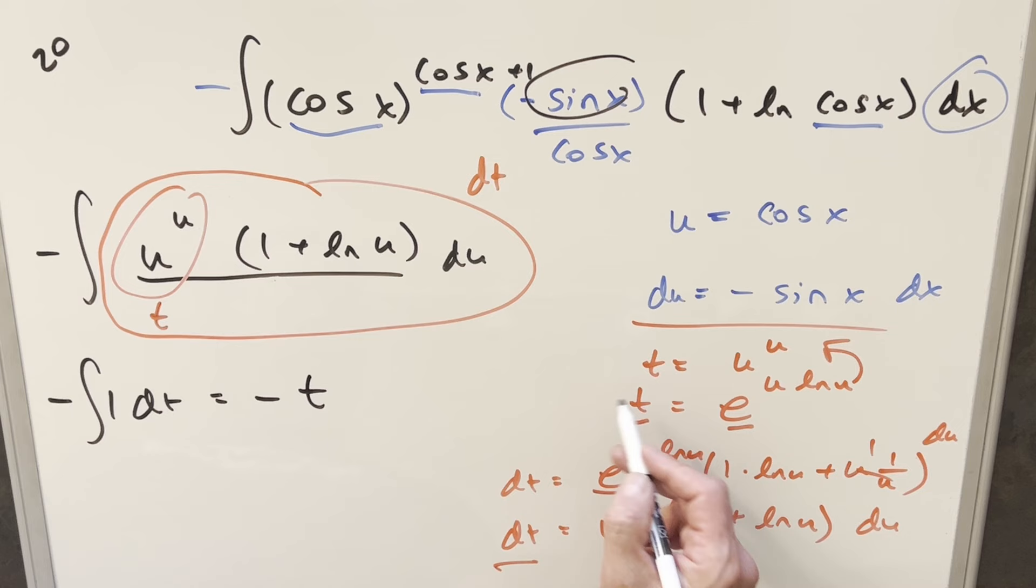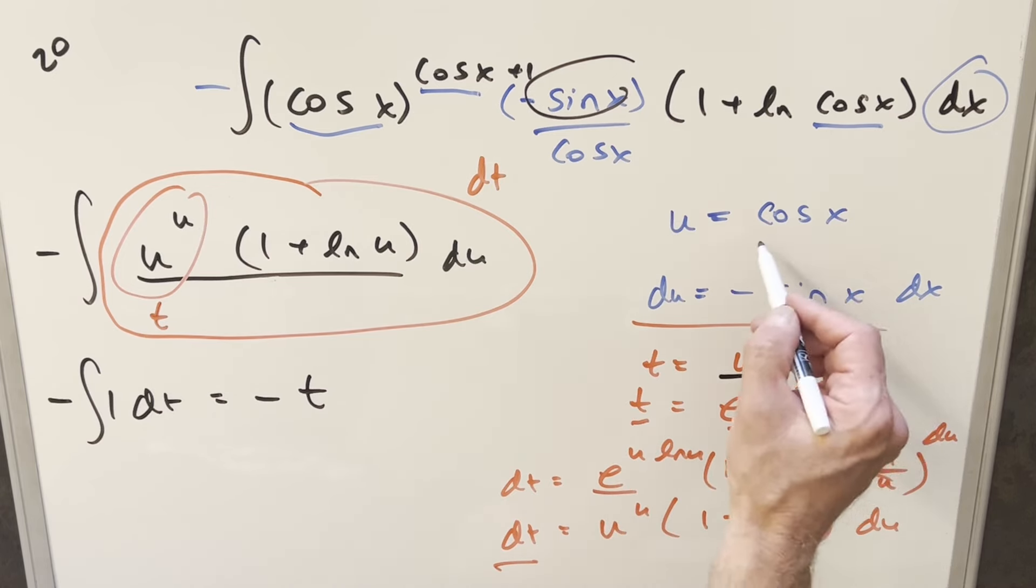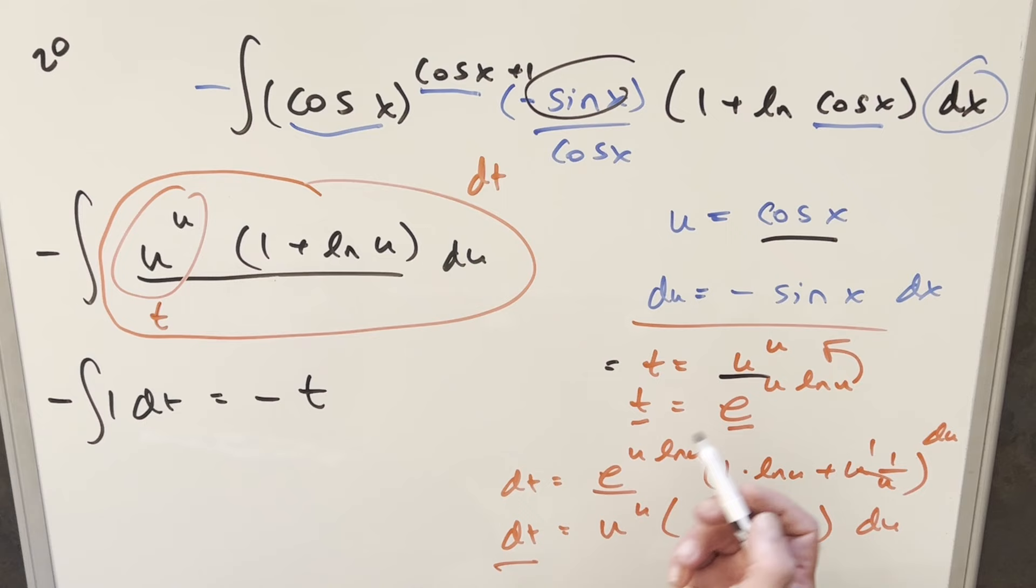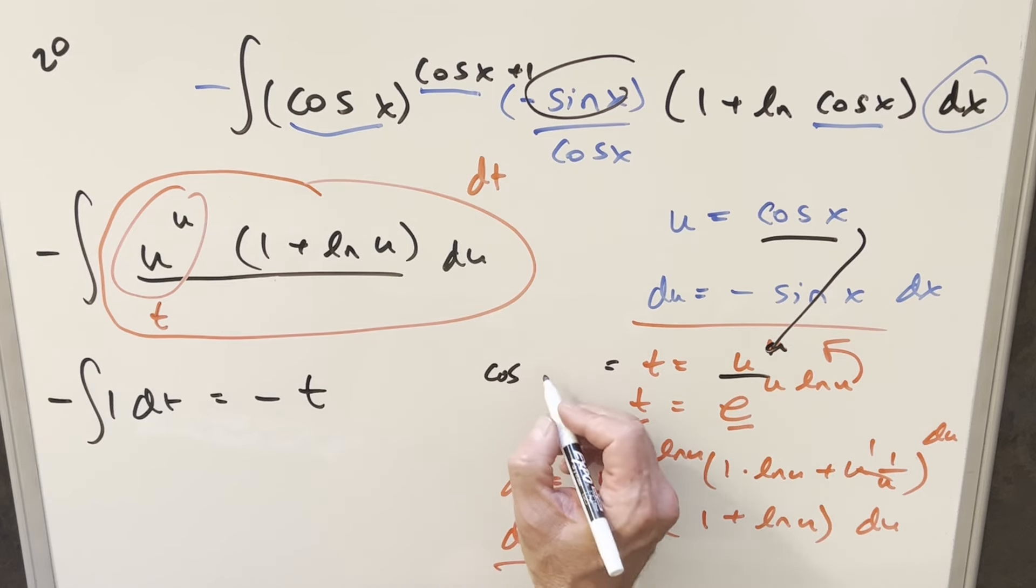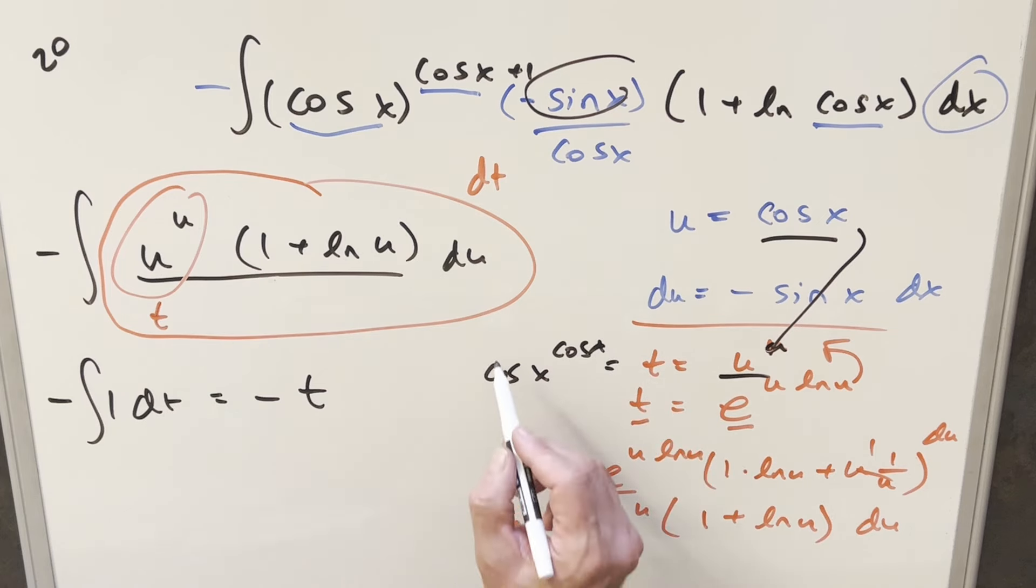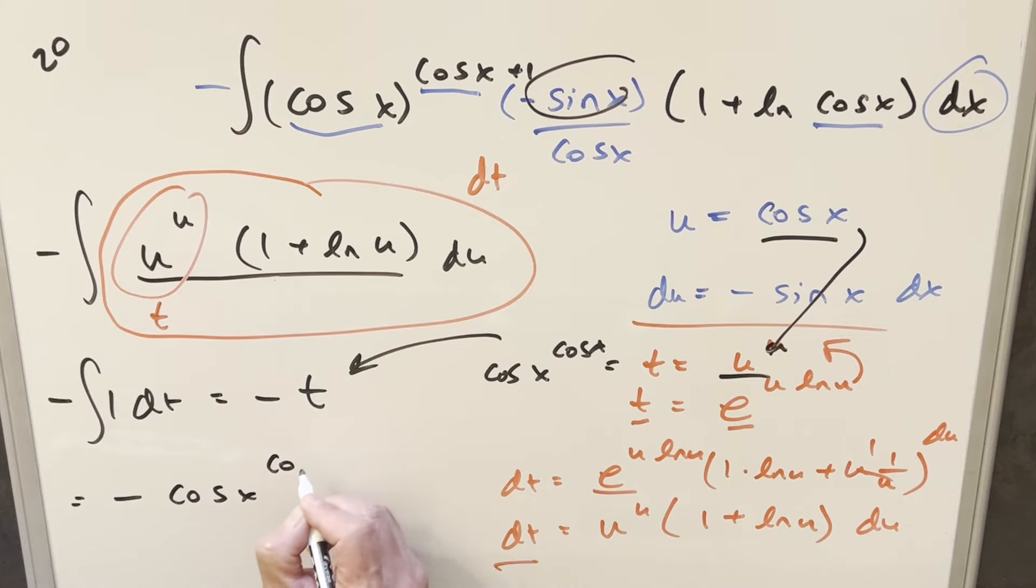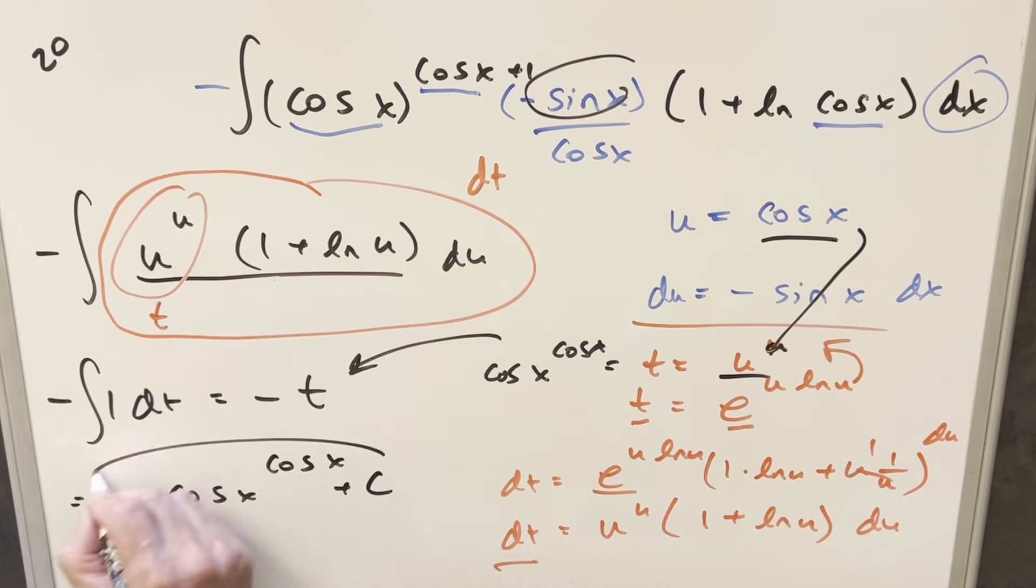I can back substitute, but we're going to be back substituting twice because we have t in terms of u and we want to get back to x. So what I can do here is combine it, get it all in terms of x. We plug cosine x back in here. Sorry, I messed that up, but our t value is going to become u to the u is going to be cosine x to the cosine x. So then back substitute with this for my final solution, we just get minus cosine x to the cosine x plus c, and that's it.